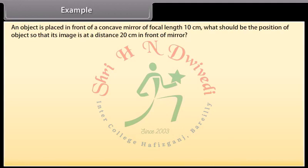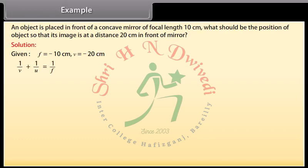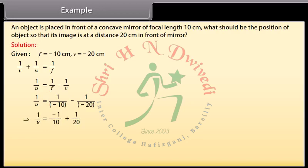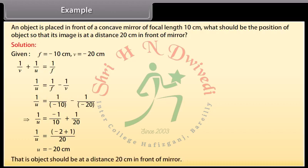Example: an object is placed in front of a concave mirror of focal length 10 cm. What should be the position of the object so that its image is at a distance 20 cm in front of the mirror? Solution: given F = -10 cm, V = -20 cm. Using 1/v + 1/u = 1/f: 1/u = 1/f - 1/v = 1/(-10) - 1/(-20) = -1/10 + 1/20 = (-2+1)/20. Therefore u = -20 cm. That is, the object should be placed at a distance of 20 cm in front of the mirror.